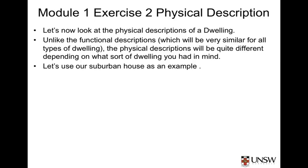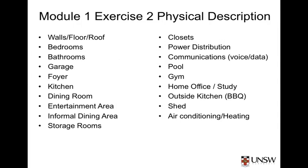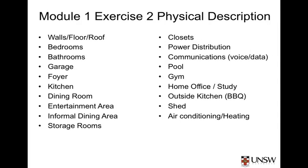Unlike the functional descriptions, which will be very similar for the types of dwelling each of you considered, the physical descriptions are probably quite different, depending on what sort of dwelling you had in mind. For a suburban house, we have walls, floor, and roof, as well as bedrooms, bathrooms, storage rooms, kitchens, and so on as the basic physical building blocks. A large house may also have a pool, perhaps even a gym, and may even have an outdoor kitchen.